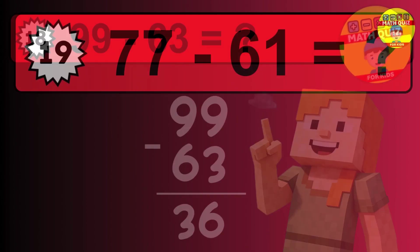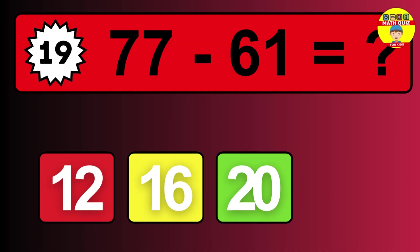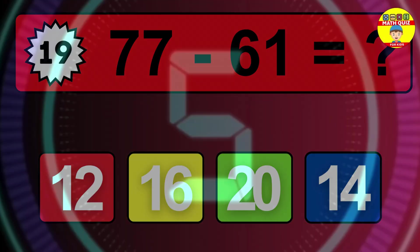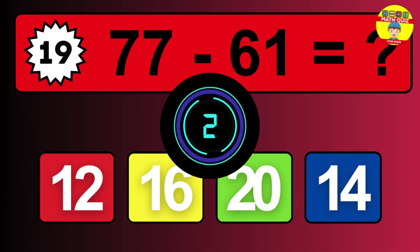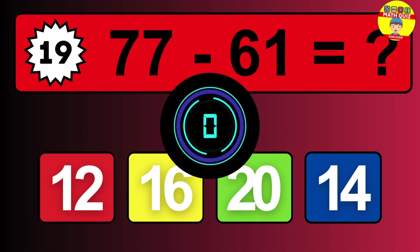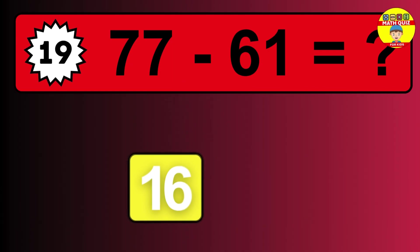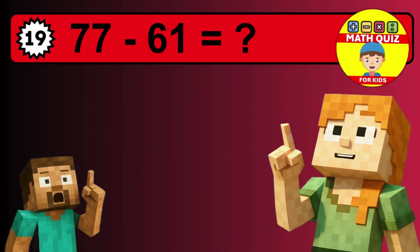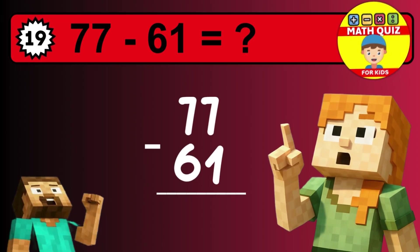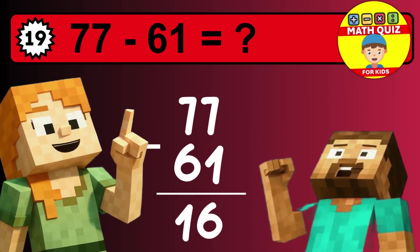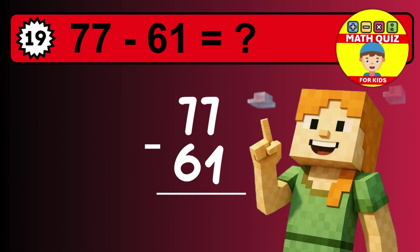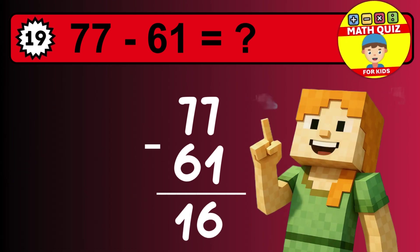What is 77 minus 61? Time to think. Let's solve this step by step. We start with the units: 7 minus 1 is 6. Then we go to the tens: 7 minus 6 is 1. The final answer is 16.